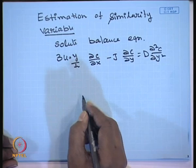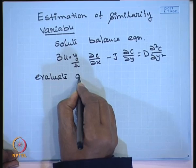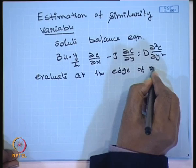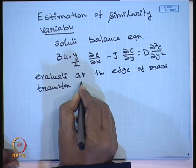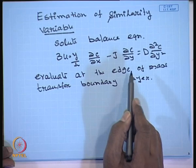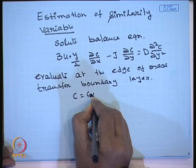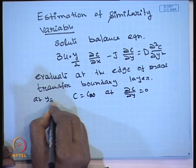Since it is a governing equation, it must be valid on the boundary conditions also. So we evaluate this equation at the edge of the mass transfer boundary layer. In a boundary layer, the derivative of the dependent variable with respect to y (the normal variable) will be equal to 0. That means c = c₀ (bulk) and ∂c/∂y = 0 at y = δ, the edge of the boundary layer.